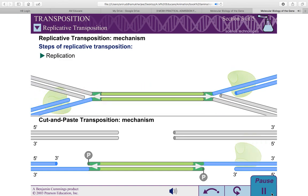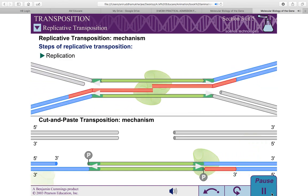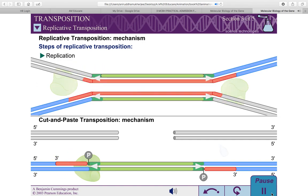The DNA replication machinery can then assemble at one or both of the forks. The 3' hydroxyls of the nicked target DNA serve as primers for DNA synthesis. Replication proceeds through the transposon sequence, generating two copies of the transposon DNA.